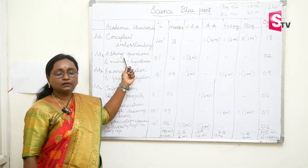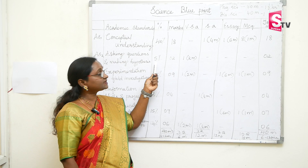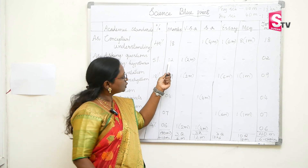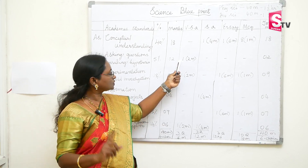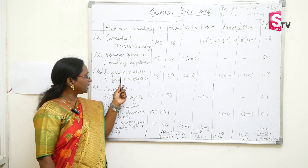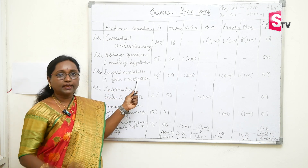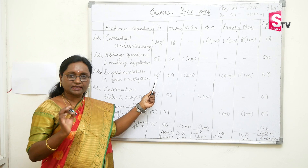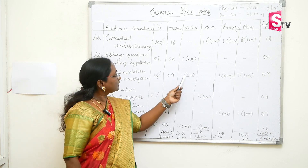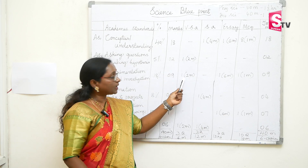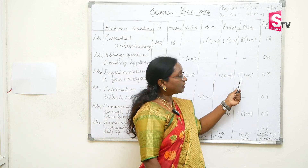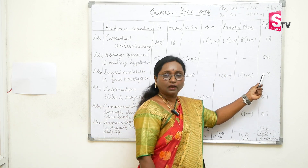The second academic standard — asking questions and making hypothesis — covers only 5% of the paper and carries a total of 2 marks, with one very short question answer. The third standard — experimentation and field investigation — covers 18% of the paper for a total of 9 marks: one very short question answer, one essay question worth 6 marks, and one multiple choice question.